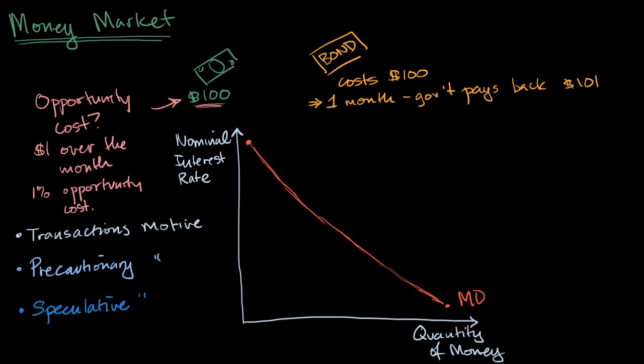And in previous videos, we've started thinking about the supply of money, and we'll think more in future videos about different monetary policies, but in a classical model, we assume a perfectly inelastic supply of money. So we draw it as a vertical line, which is another way of saying that the supply of money is not impacted by the nominal interest rate. So this is the supply of money.